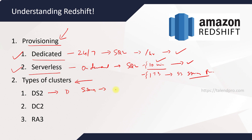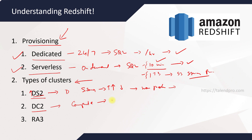In the Dense Storage cluster type, you will have more storage but limited processing power. Processing power means compute, so you have very less compute power but your storage will be really high. These are suitable for non-production applications or research and development. These instances are comparatively cheaper.